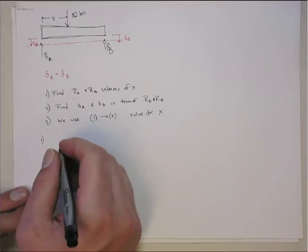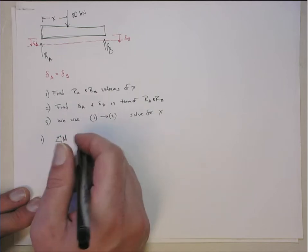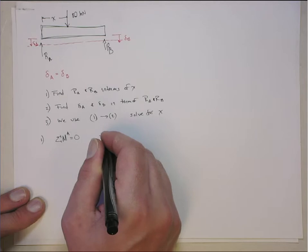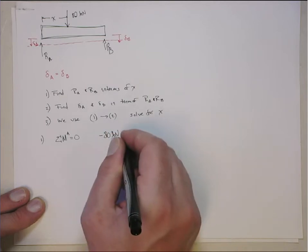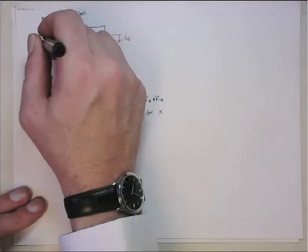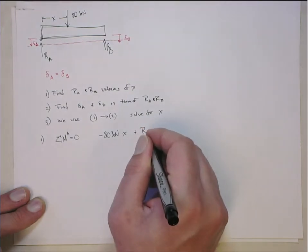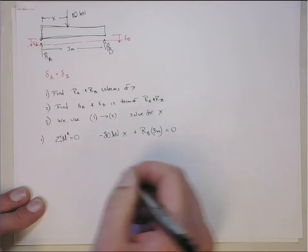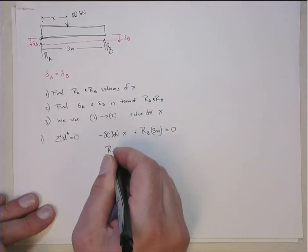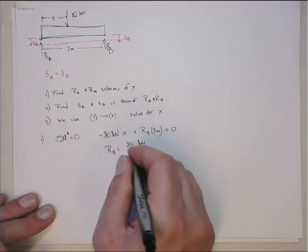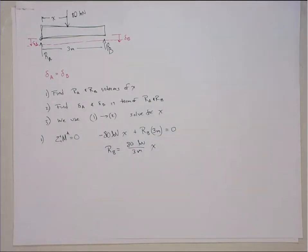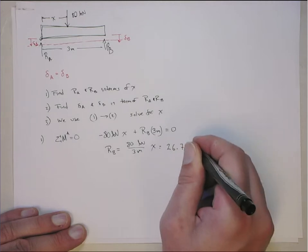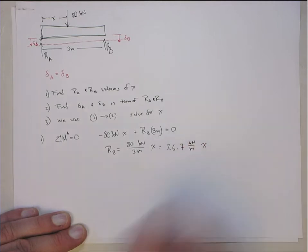And then the last step, we can use what we find from step one, put it into the equation we get in step two, and then we'll be able to solve for X. So we'll be able to solve this equation here for X, but it'll be in terms of X. All right, so let's do the first part. Let's find the reaction forces in terms of X. So let's do a sum of moments around point A. That equals zero. So that gives me that minus 80 kilonewtons times X, that's the moment of this one around point A, plus the reaction B times its moment arm, which the book gives you as three meters, has to equal zero.